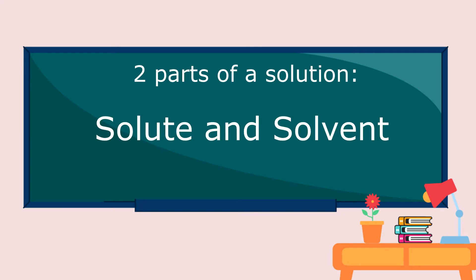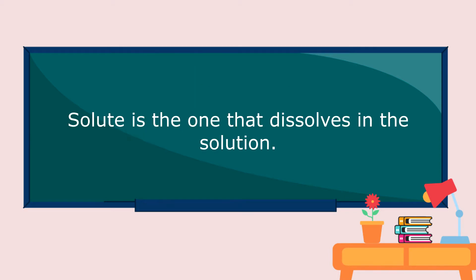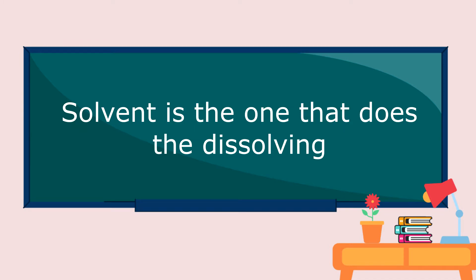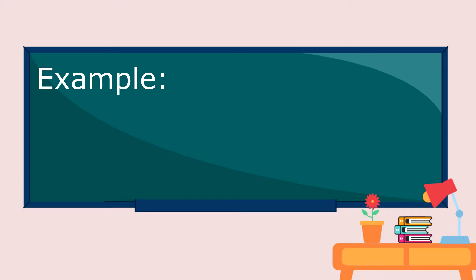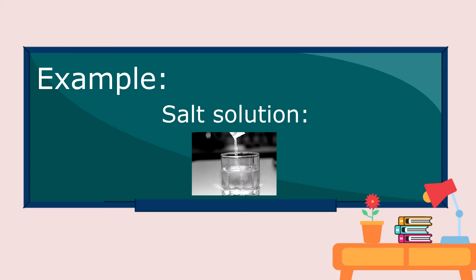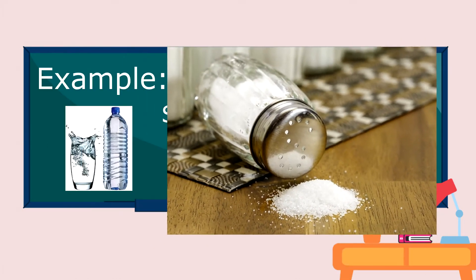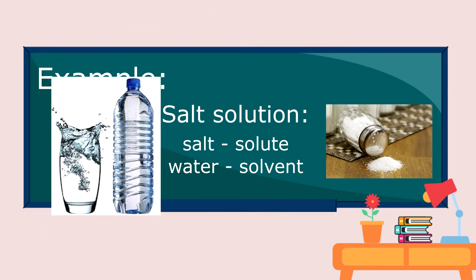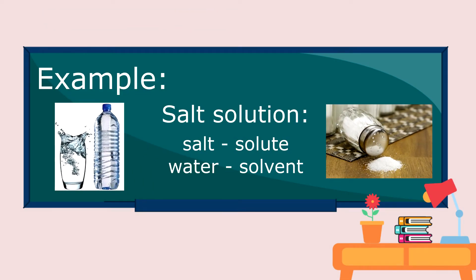There are two parts of a solution: solute and solvent. Solute is the one that dissolves in the solution. Solvent is the one that does the dissolving. For example, in a salt solution, salt is the solute and water is the solvent.